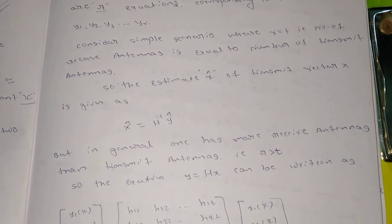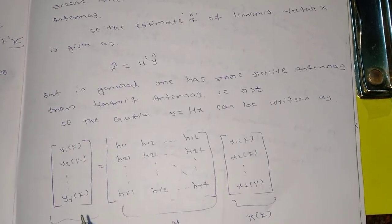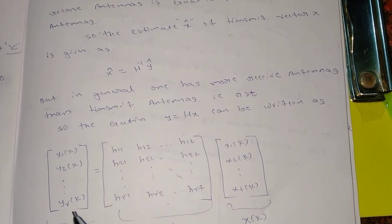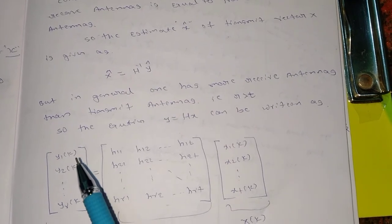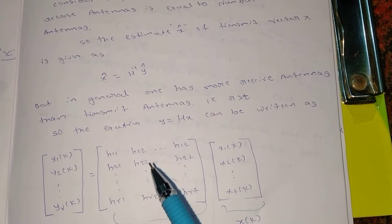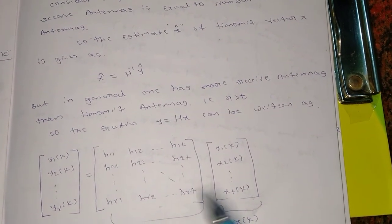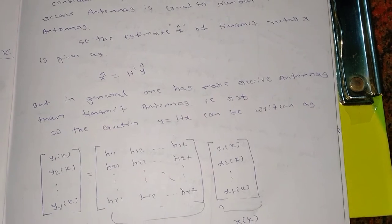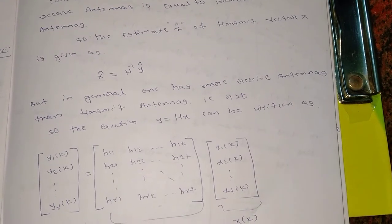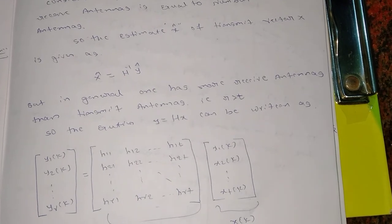The general channel equation has y1(k), y2(k), up to yR(k) as received vectors at time instant k. The channel fading coefficient matrix H is of dimension R×T, where R is the number of receiving antennas and T is the number of transmitting antennas. The transmitted symbols are x1(k), x2(k), and so on. For now, we assume that noise is not present.